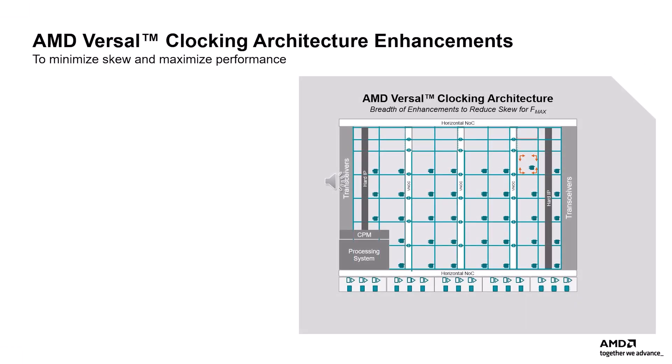Here is a high-level view of the Versal clocking architecture enhancements. Versal devices have a segmented clocking structure where global clocking is used throughout the device, but loads can be placed regionally or globally. This results in efficient clock resource utilization, support for an increased number of design clocks, and improved clock characteristics for performance and power.